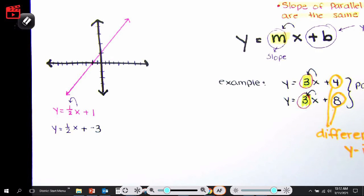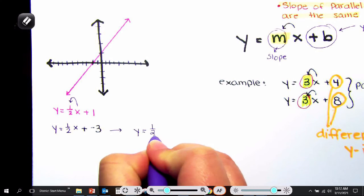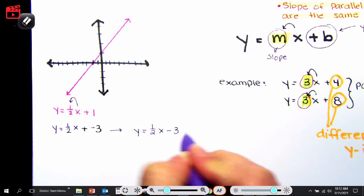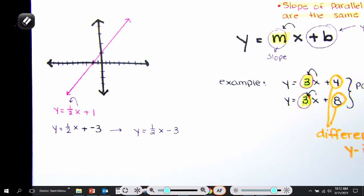So how would we graph this? Let me rewrite it just a little bit better. Let's do y equals 1 half x minus 3. Instead of plus, because I have a plus and negative, I'm going to remove that plus and just keep it a minus. So how do we graph this?